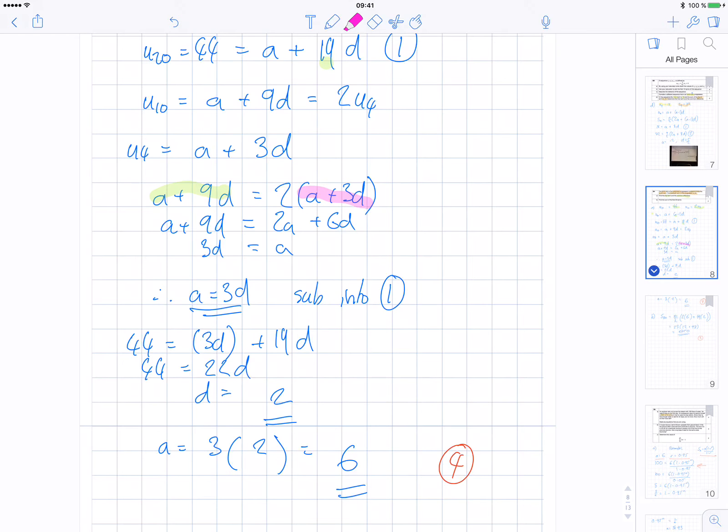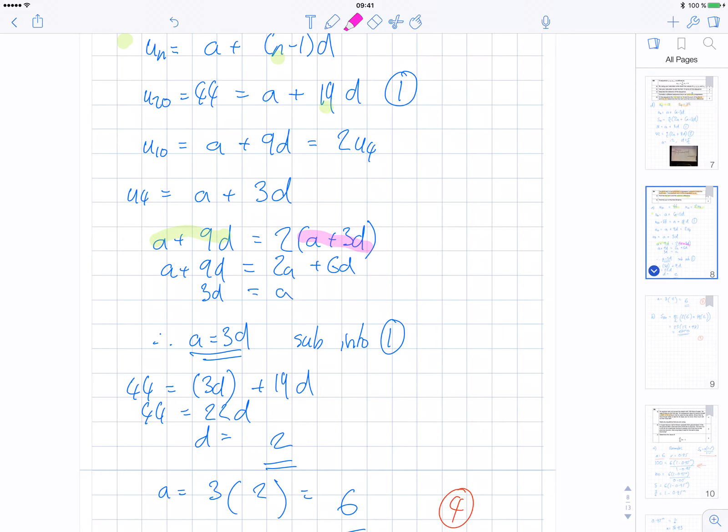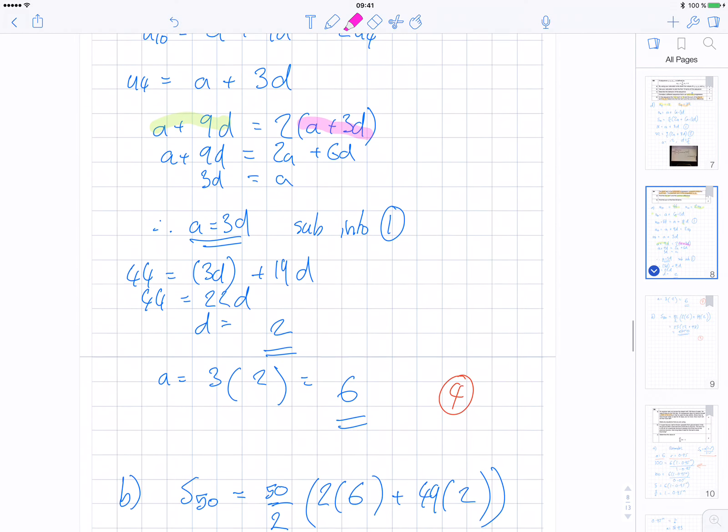I put that back in to equation 1 for u20 and I solve. And I get d equals 2. I put that back into a equals 3d. So a is equal to 6.